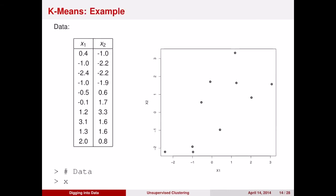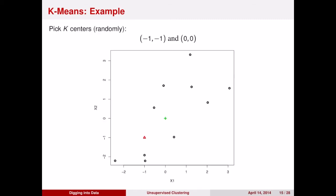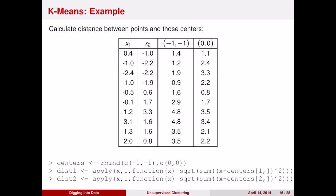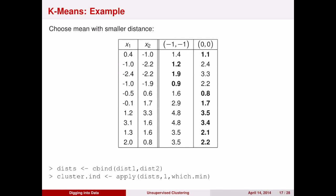Let's walk through an example. Let's say that you have data that look like this. You first randomly choose two cluster means by throwing dart boards on your data plane. Let's say that we have two clusters, and we chose negative 1, negative 1 and 0, 0. Now, for each data point, we compute the distance from the data point to each of these two clusters. We now associate each data point with the cluster that's closest to them. Given these two cluster means, we now have an association of each data point to one of the clusters. We break ties arbitrarily.